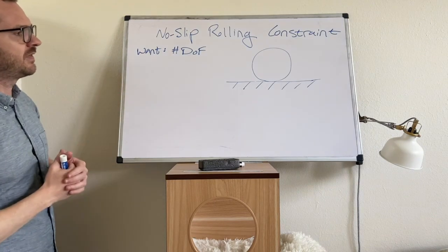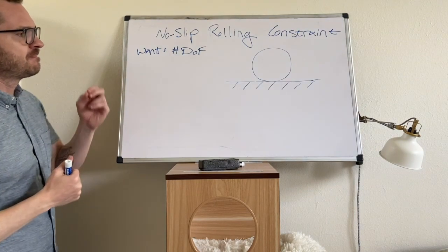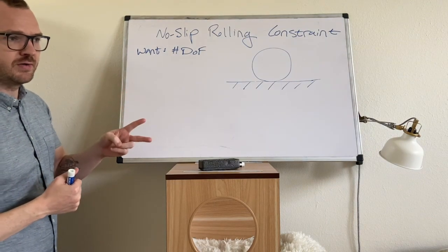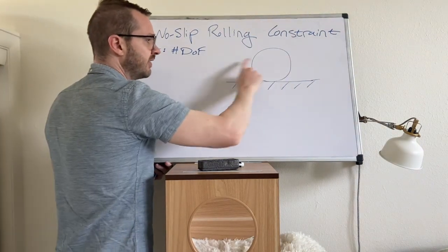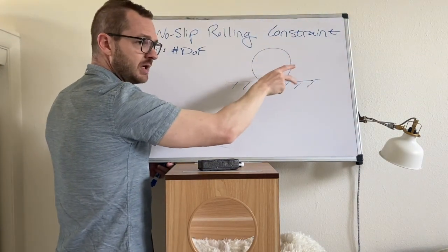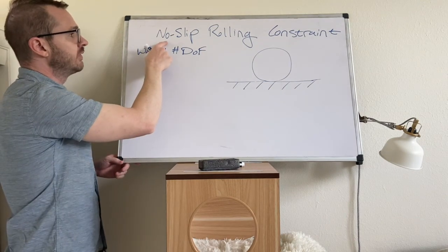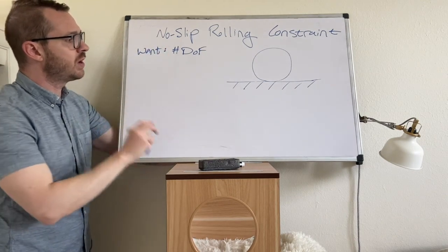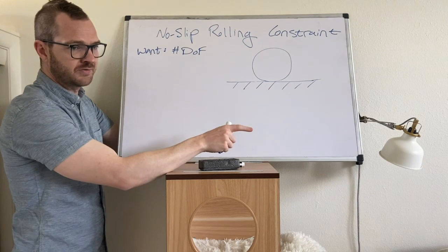So we can say that this thing's going to have two generalized coordinates, because there's going to be a translation and a rotation. And then, because we're saying no slip, that means that when you rotate it, you're also going to translate it.